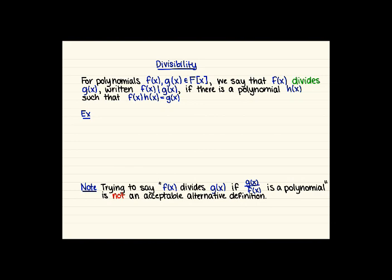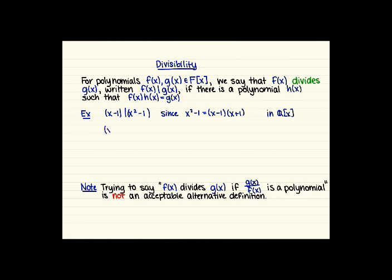For some examples: x minus 1 divides x squared minus 1, since x squared minus 1 equals (x minus 1)(x plus 1). That's in Q adjoin x. Also, x squared plus x plus 1 divides x cubed minus 1, since x cubed minus 1 equals (x squared plus x plus 1)(x minus 1). That one is also in Q adjoin x. It's going to be really important to keep paying attention to what our base field is.